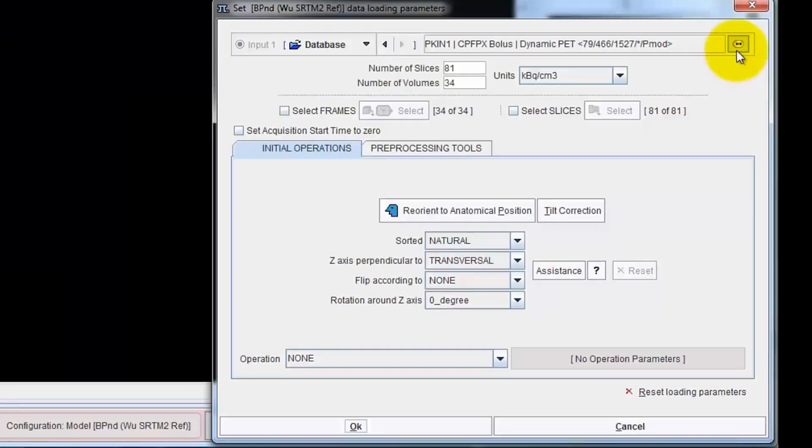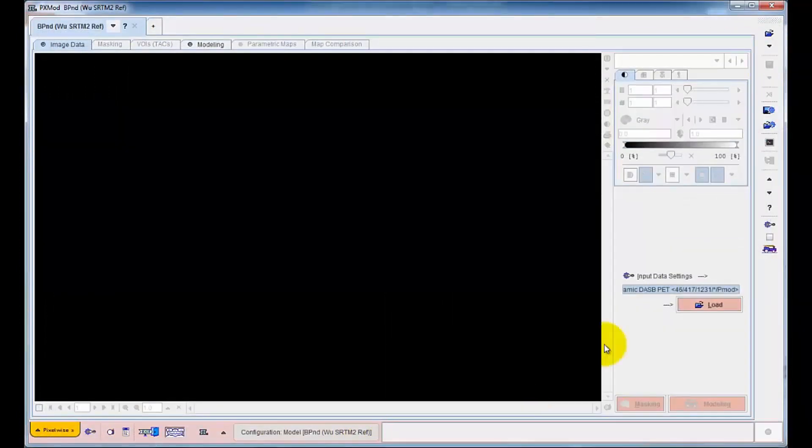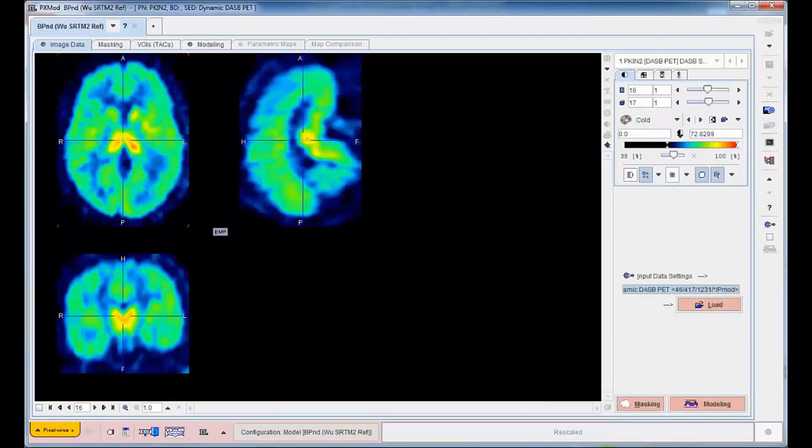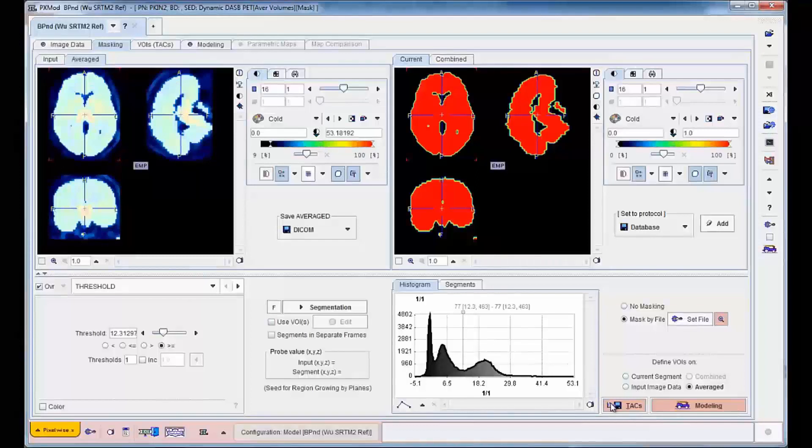On the first page, the dynamic DASB study is loaded, after which we proceed to the next page for definition of a background mask. This mask will remove activity outside the brain from the analysis.